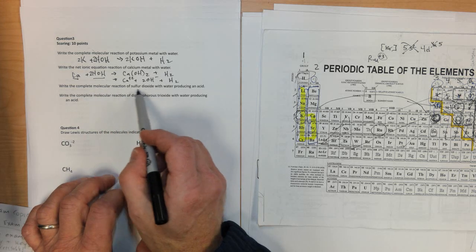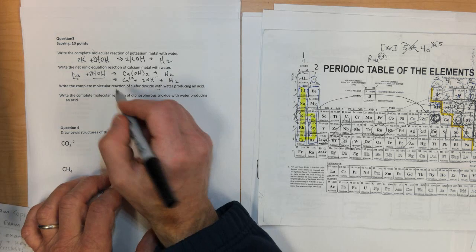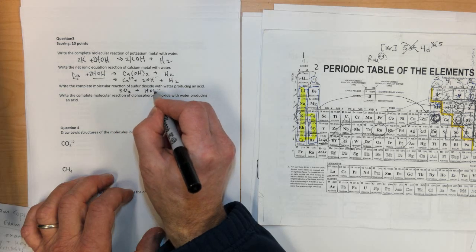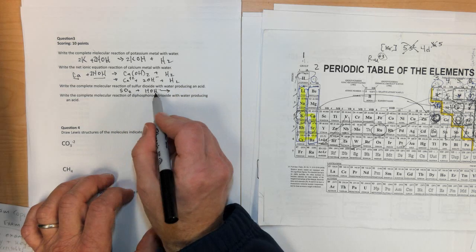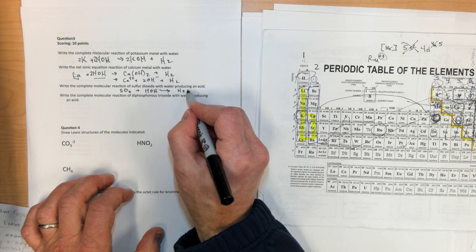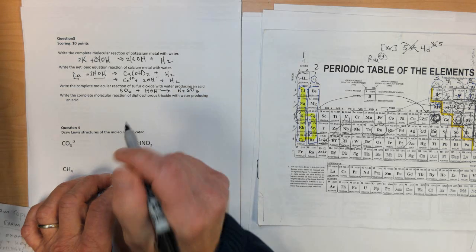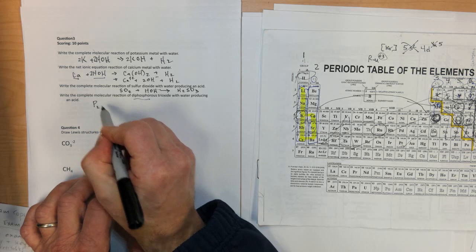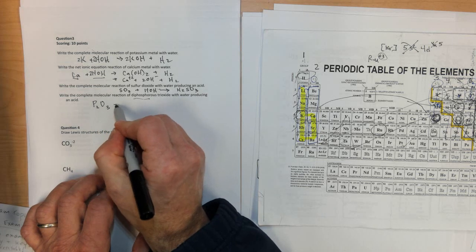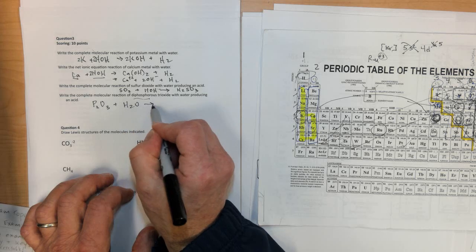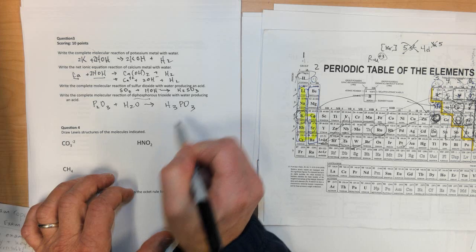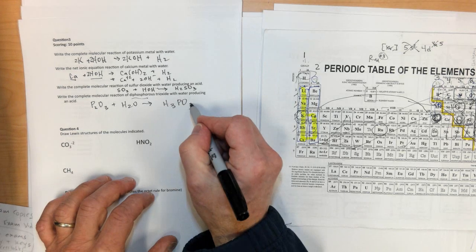Write the complete molecular equation for sulfur dioxide reacting with water. Sulfur dioxide reacts with HOH. This is a non-metal oxide in water, which is going to make an acid, H2SO3. And then the last one is diphosphorus trioxide reacts with water. Once again, a non-metal oxide with water is going to make H3PO3. I'm sorry, H3PO4.